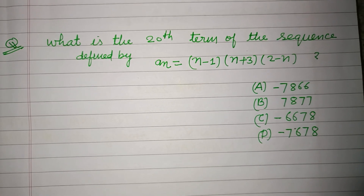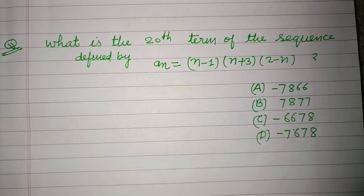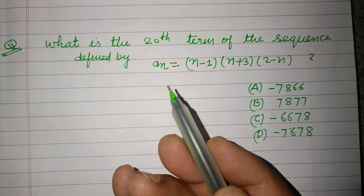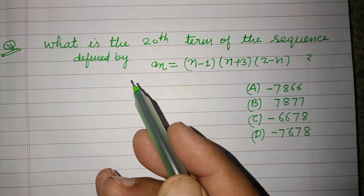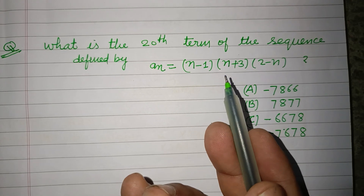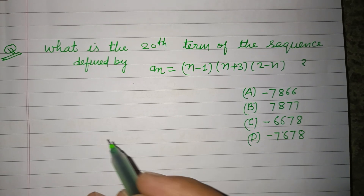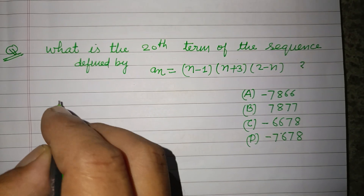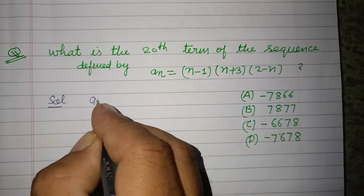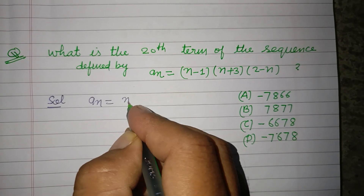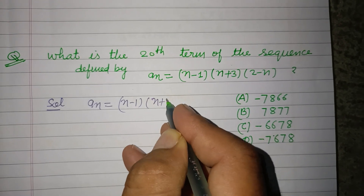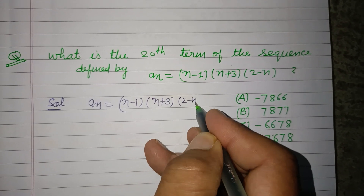Hello viewers, a warm welcome to this YouTube channel. What is the 20th term of the sequence defined by a(n) = (n-1)(n+3)(2n-1)? The n-th term of the series is given as (n-1)(n+3)(2n-1).